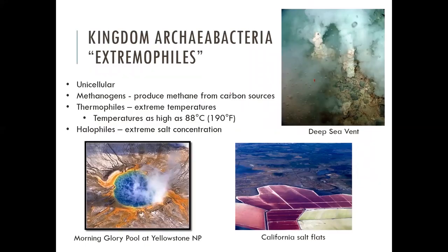We're only going to talk about Archaea briefly. They're known as extremophiles because they survive in extreme environments. Just like Bacteria, Archaea are all unicellular — not multicellular. The major difference between unicellular and multicellular is whether cells can survive on their own. Unicellular organisms can be colonial, with different cells working together, but you could pick one cell off and it would survive just fine on its own. Unlike multicellular organisms — like humans — where individual cells such as a skin cell removed from the body will die.